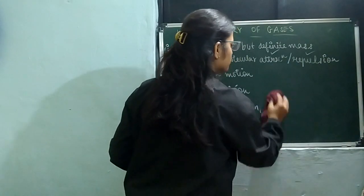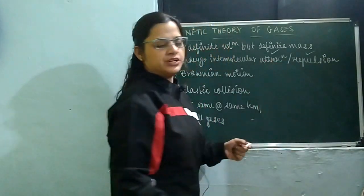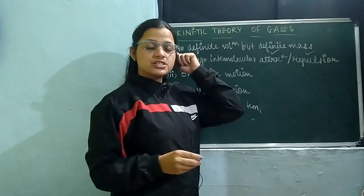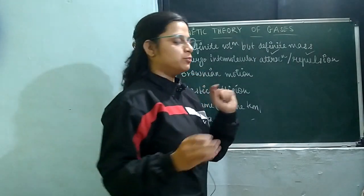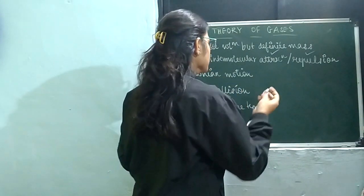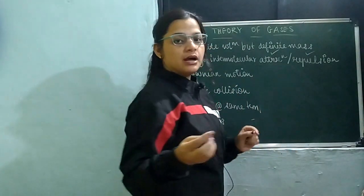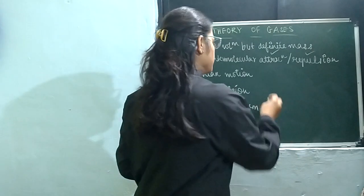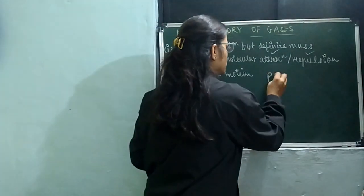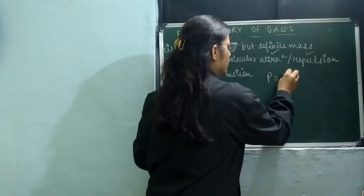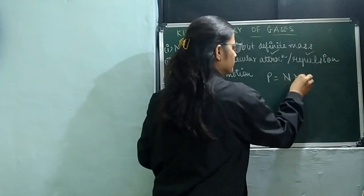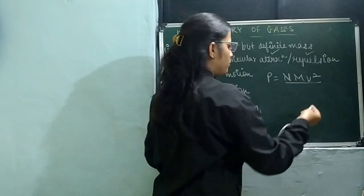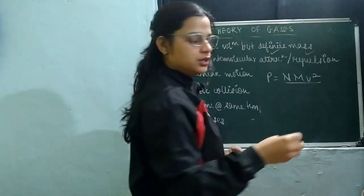Now let's write the formula and try to understand it — how it relates to pressure. So P equals NmV² upon 3V, where V-bar square means mean square velocity.